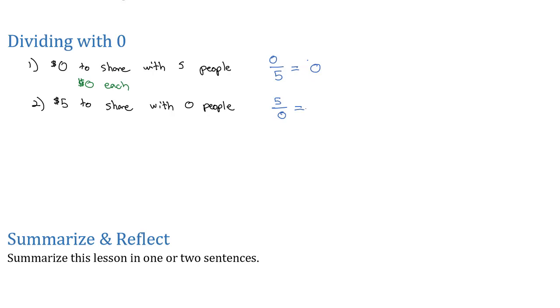When we divide by zero, we're going to say the solution is undefined. Or sometimes you'll see the letters DNE for does not exist. In other words, I can't get started sharing that five dollars with the zero people because I have no way to start giving it out. I have nobody to give it to.